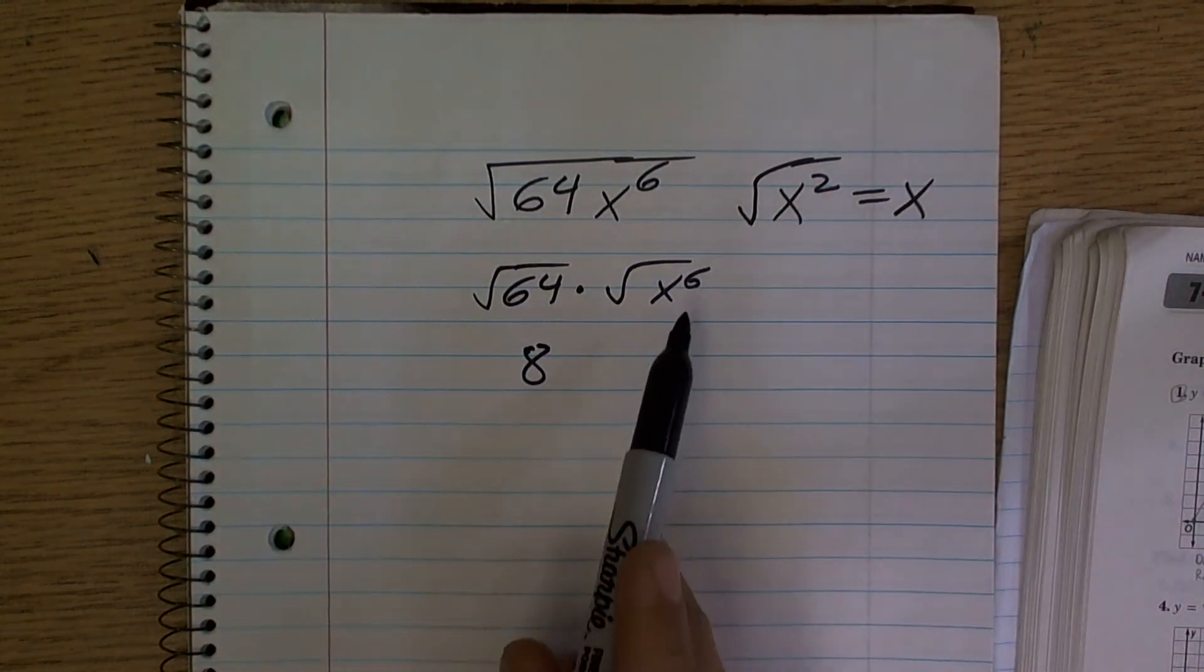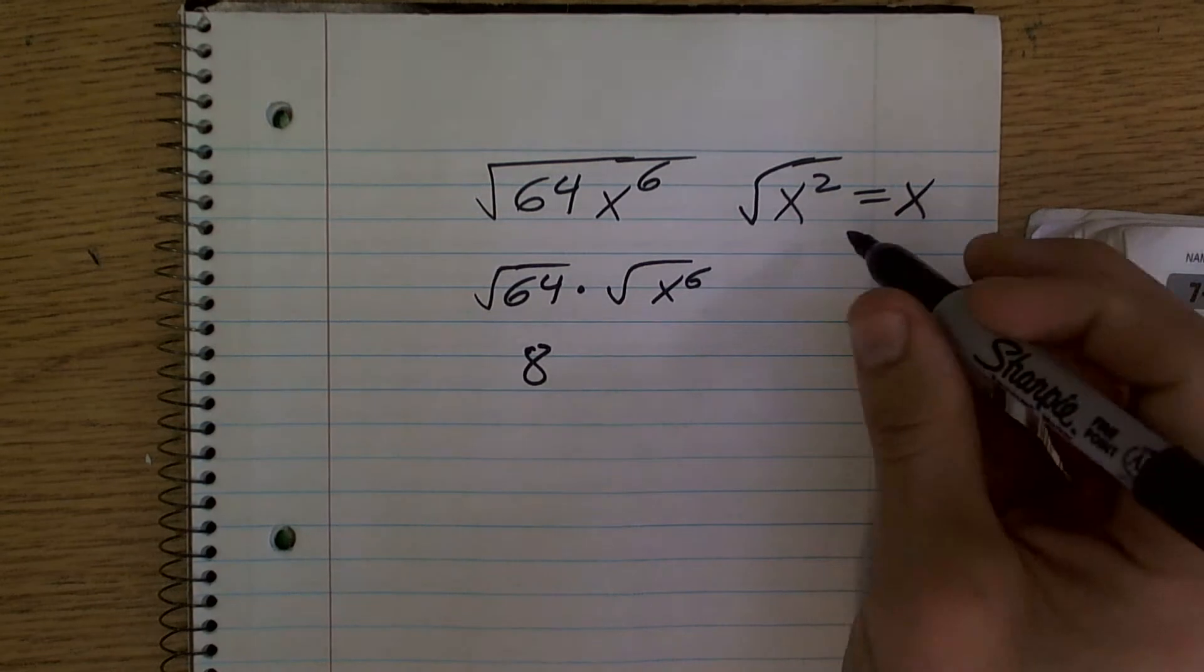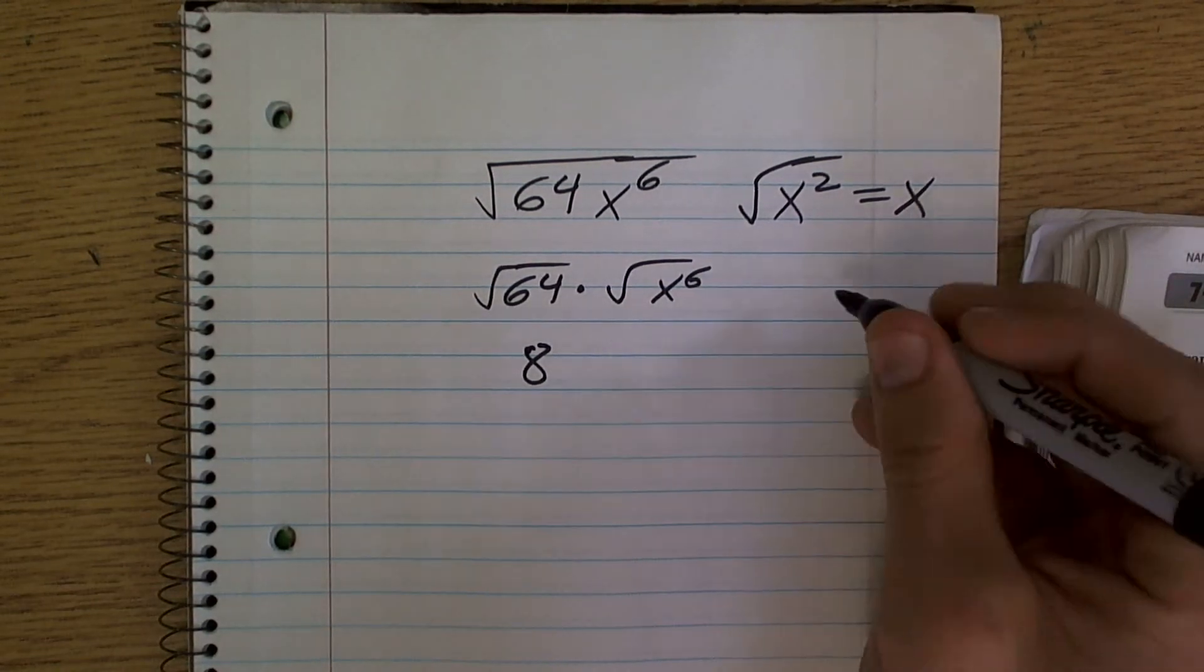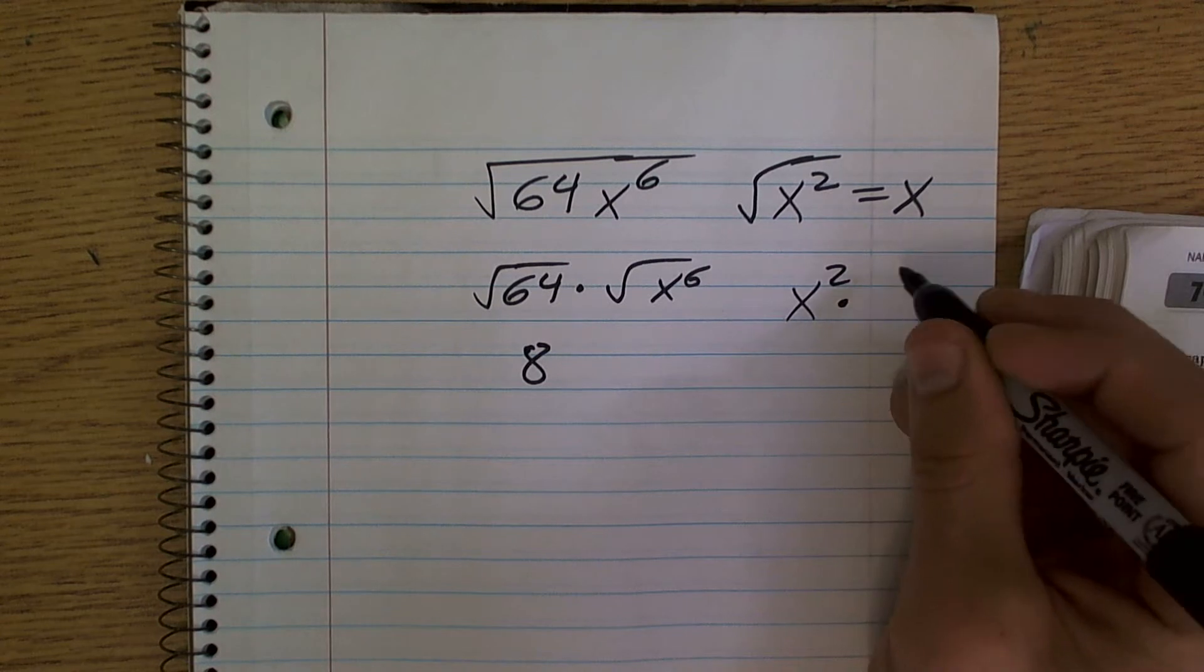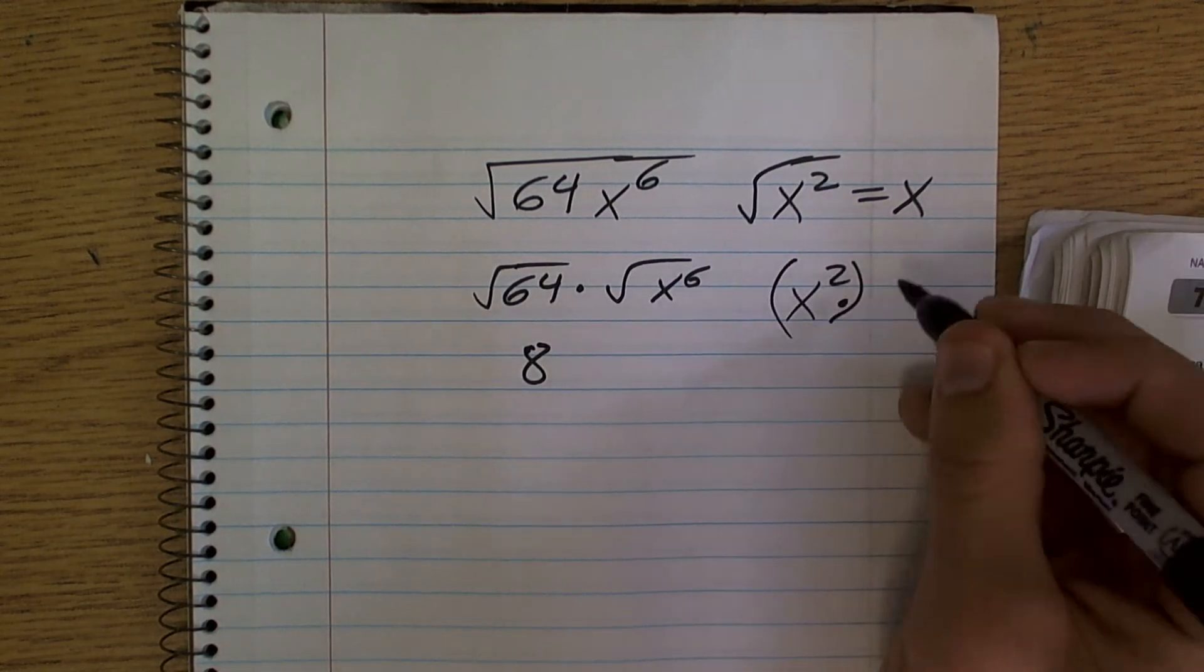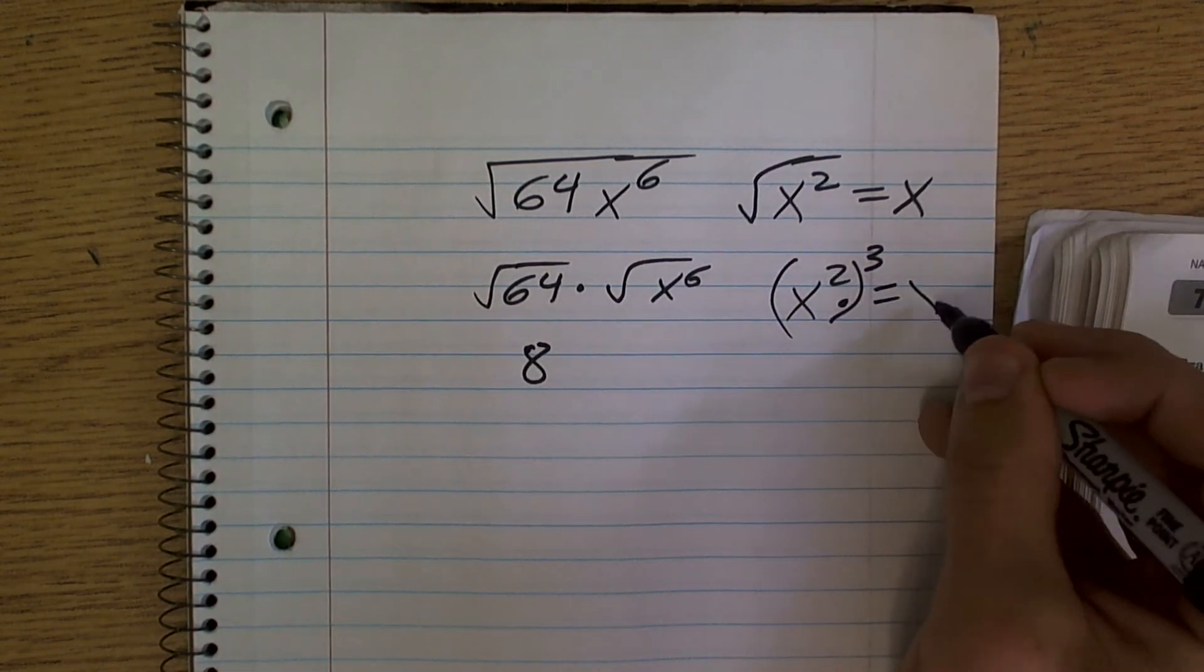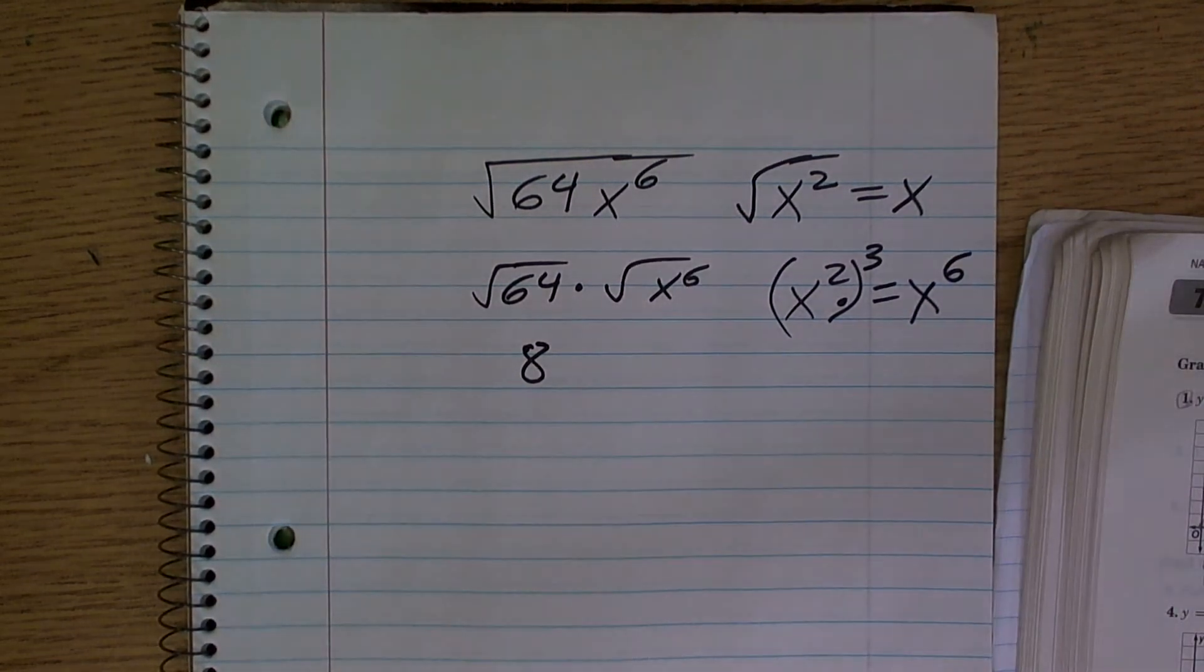So what I want to do, and actually another thing for us to remember is the property of exponents, that x squared to the 3rd equals x to the 6. You're going to multiply those exponents, right? Does it make sense?